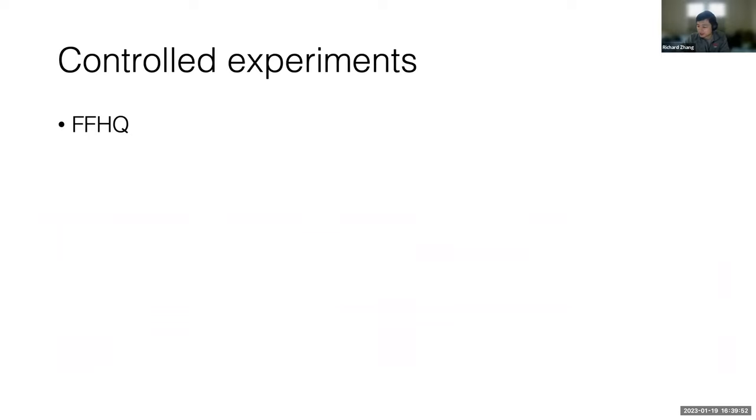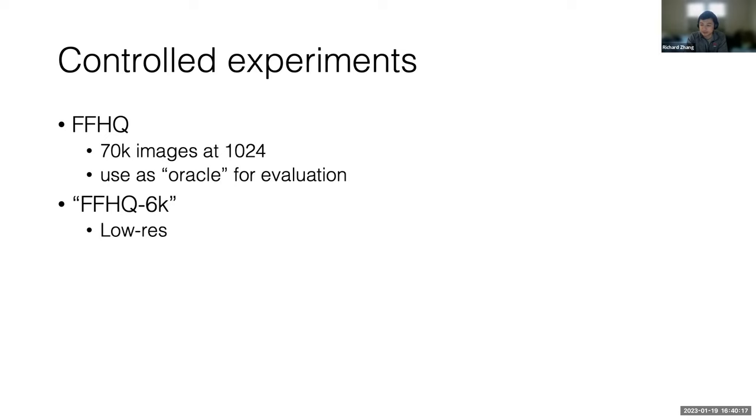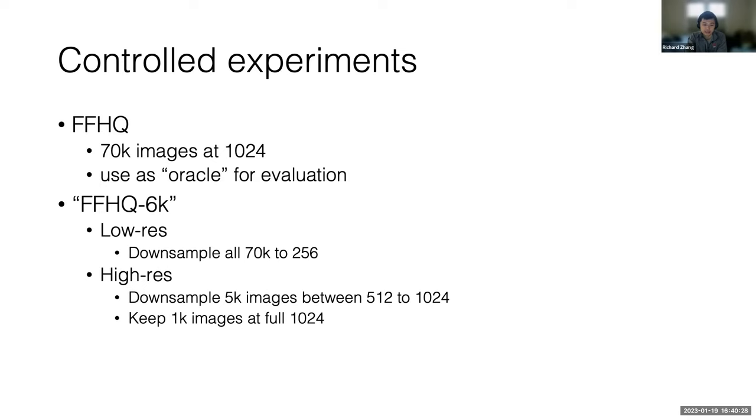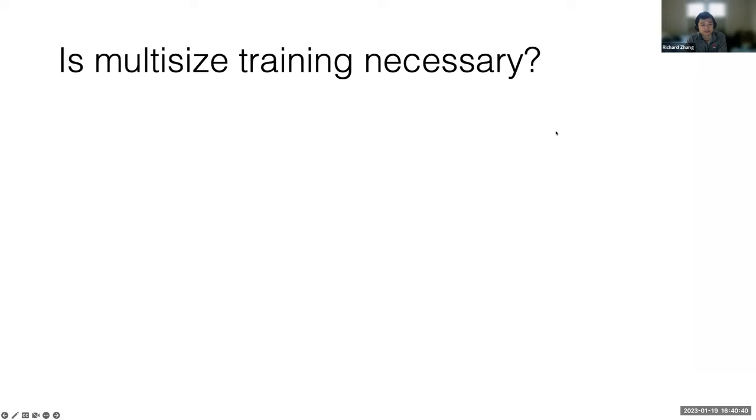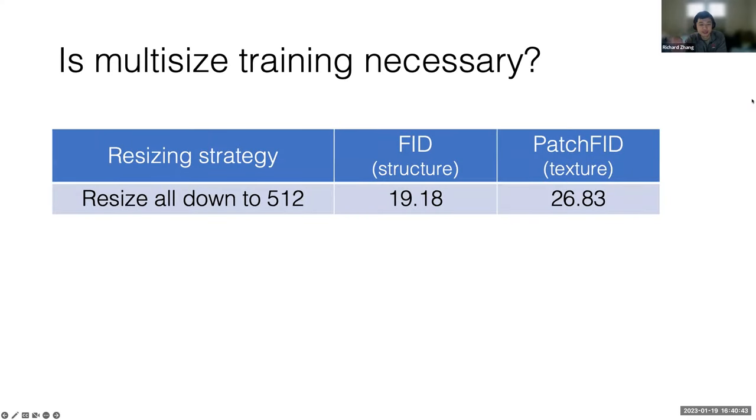We've also done some controlled experiments to show that all our steps are necessary. To do that, we need to have a controlled setting. For that, we use FFHQ where you do have ground truth. We'll call them high-res images at 1024 available. We can use that as an oracle for evaluation, but for training, we can sample from the set to produce an artificial any-res dataset just for testing purposes. Low res, you can downsample all the images to 256. For kind of higher or mixed res, we can downsample five of them between 512 and 1024, and we can keep a thousand of them at the full 1024. So we can see how efficiently can we learn from this low to mid resolution view of this oracle high res dataset. First thing we ask is, is multisize training necessary.